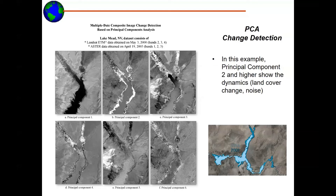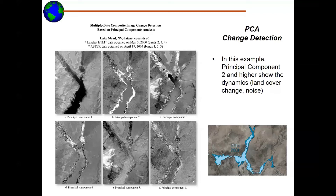The further down we go in the components, the noisier the data, until the fifth and sixth components show basically only noise. So when doing land change detection with PCA, you should focus especially on the second component and perhaps use some information in the third one as well.